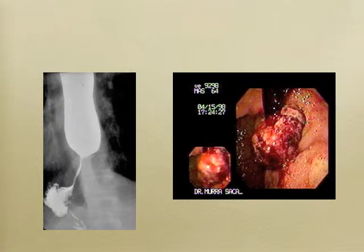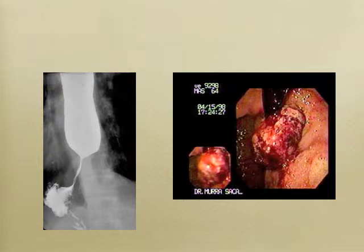The third important thing to know about achalasia is Chagas disease. The CDC has raised awareness of Chagas disease in this country in recent years. It's always been a disease of South America, but with immigration, approximately 600,000 patients with Chagas disease are believed to have come to the United States. So you might get achalasia related to Chagas disease rather than idiopathic disease.